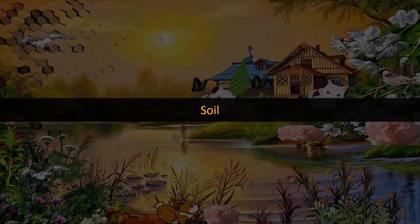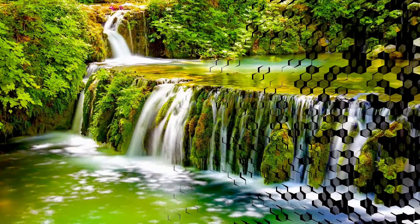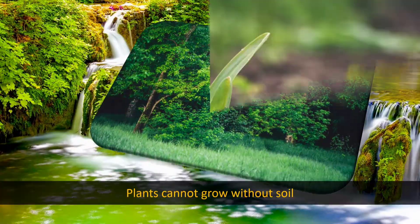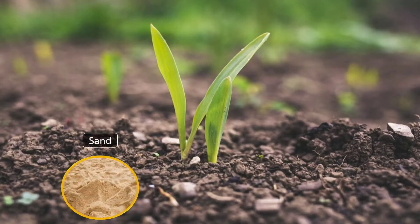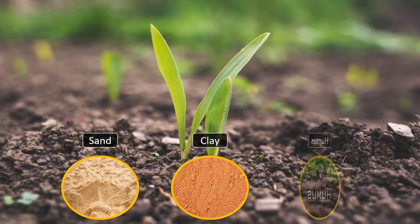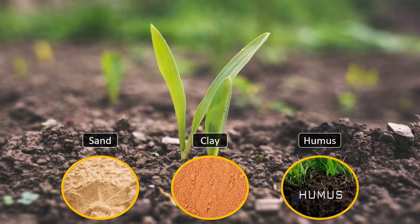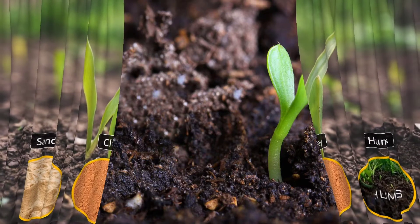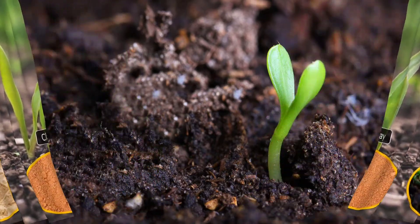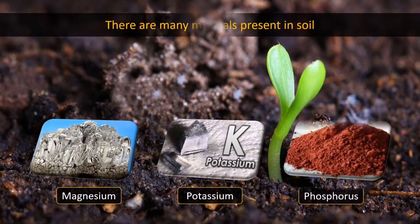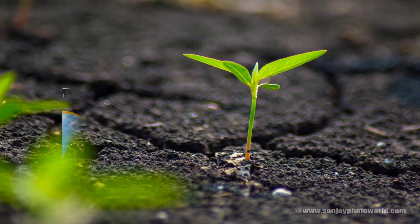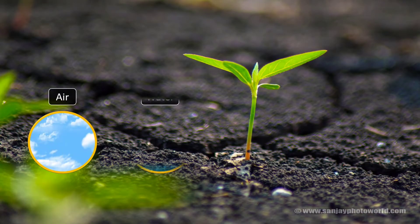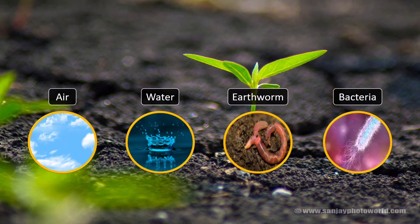Soil. Plants cannot grow without soil. Soil is made up of tiny sand particles, clay, and even humus. Humus is the remains of plants and animals. There are many minerals found in soil; these include magnesium, potassium, and phosphorus. Soil contains air, water, etc., and is home to many organisms like earthworms, bacteria, etc.